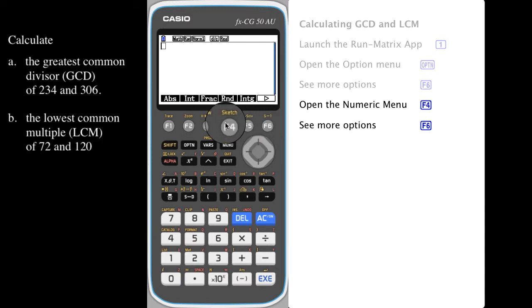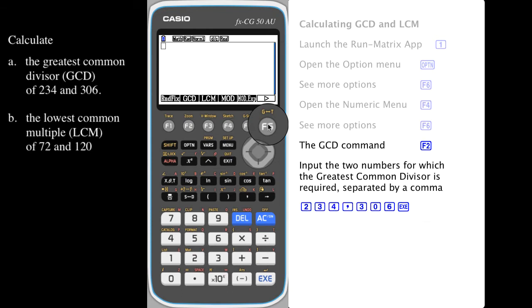Press F4 and once again access more options via F6. Here we see the GCD command above F2. Press it and then input the two numbers for which the greatest common divisor is required.